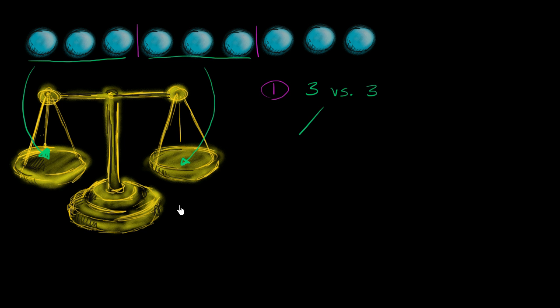Now, there's a couple of outcomes here. You're either going to have a balance, you're going to have the left is heavier—so it's going to tip down, the left is heavier—or the right is heavier. Now what does each of these tell you?